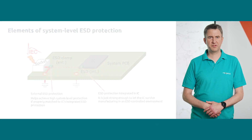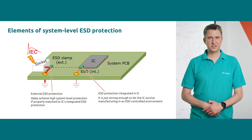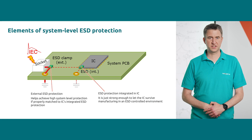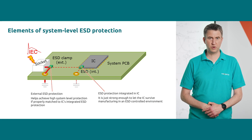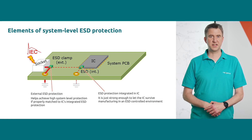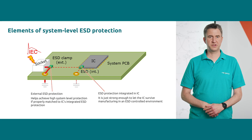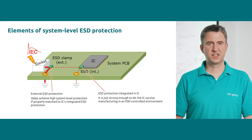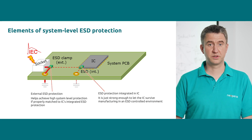Now let's look at a typical system that should be optimized. On the left there is a socket where the ESD pulse enters the signal line, next to it there is an ESD protection component, and further along the signal line is the IC that is to be protected. We will assume that the IC has an internal ESD protection and some sensitive elements, for example an input circuit.